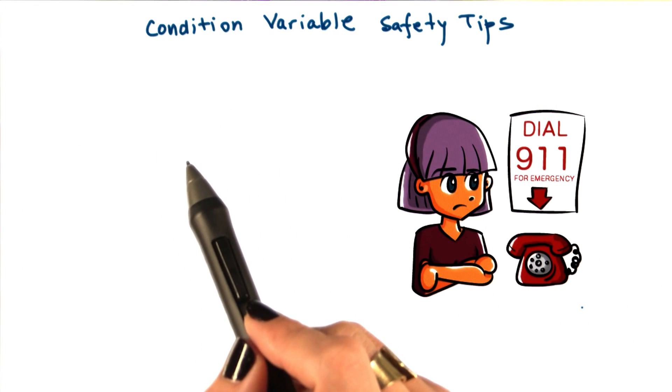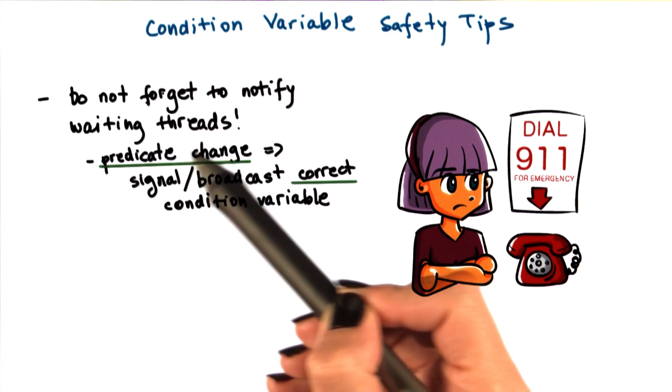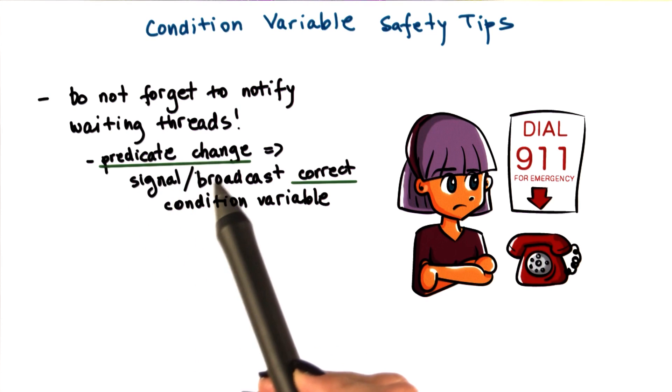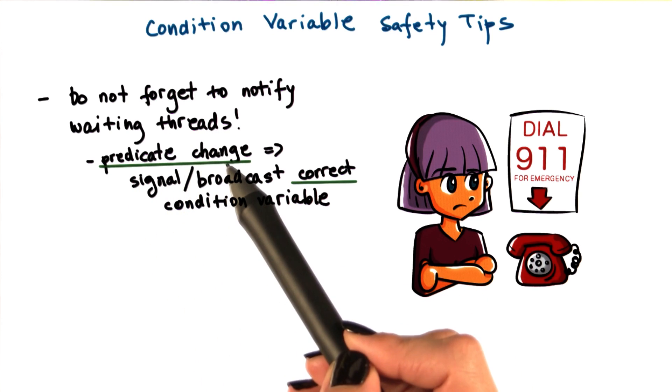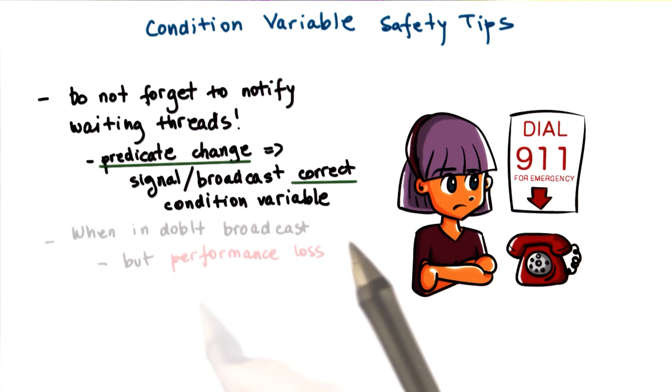And finally, a few pieces of advice regarding the use of condition variables. First, make sure you don't forget to notify the waiting threads. Whenever any aspect of a predicate that some threads are waiting on changes, make sure that you signal or broadcast the correct condition variables that these threads are waiting on.